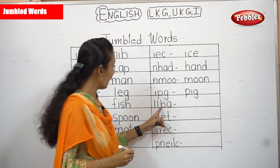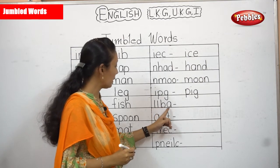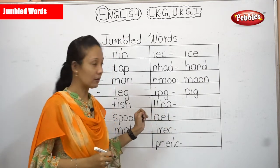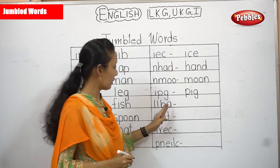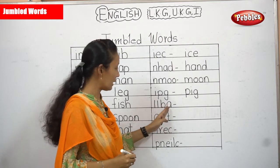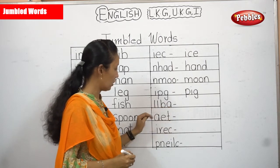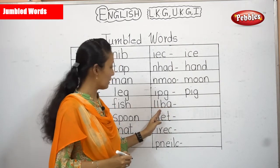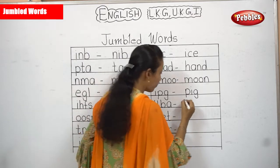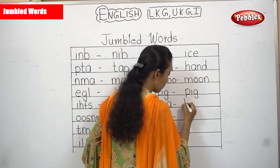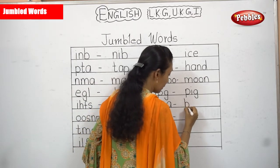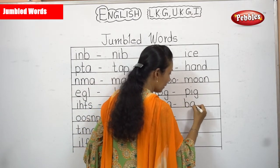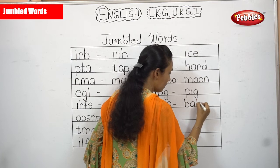Now L, L, B, A. What can it be? LLBA — no. BLLA — no. The next one: B, A, L, L — BALL! B, A, L, L — ball.